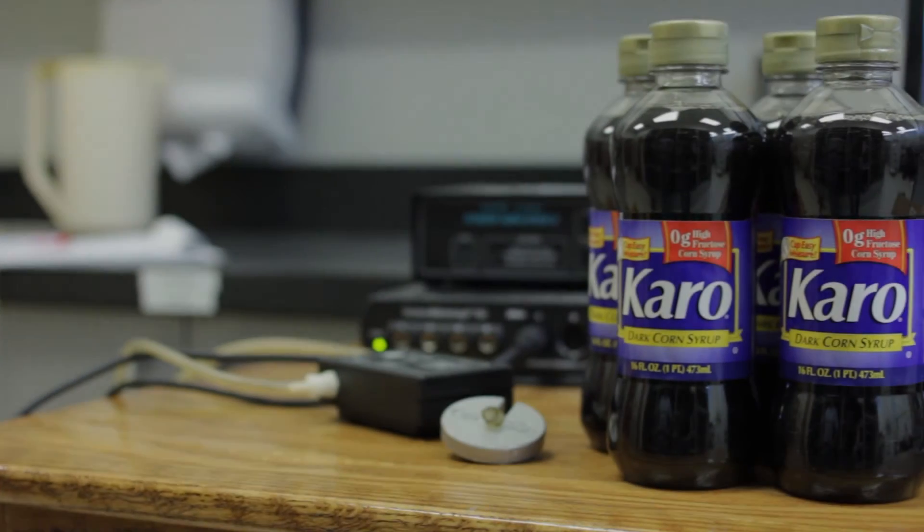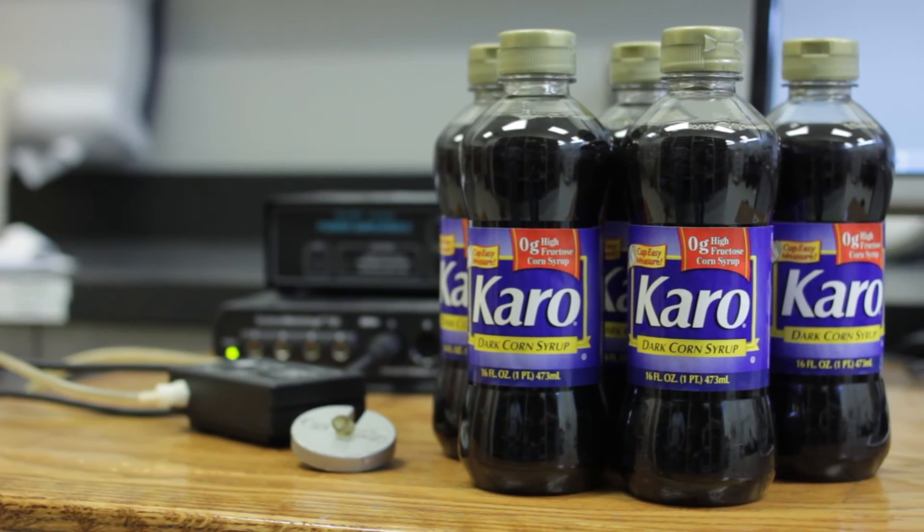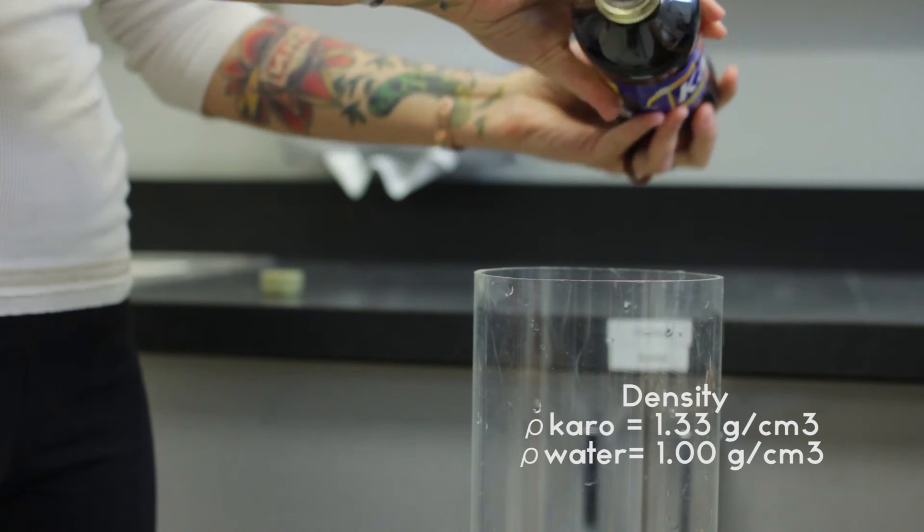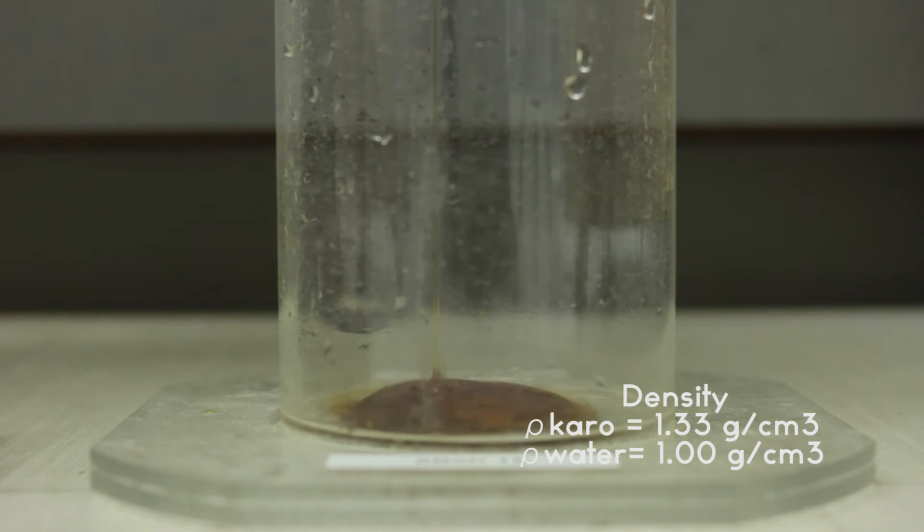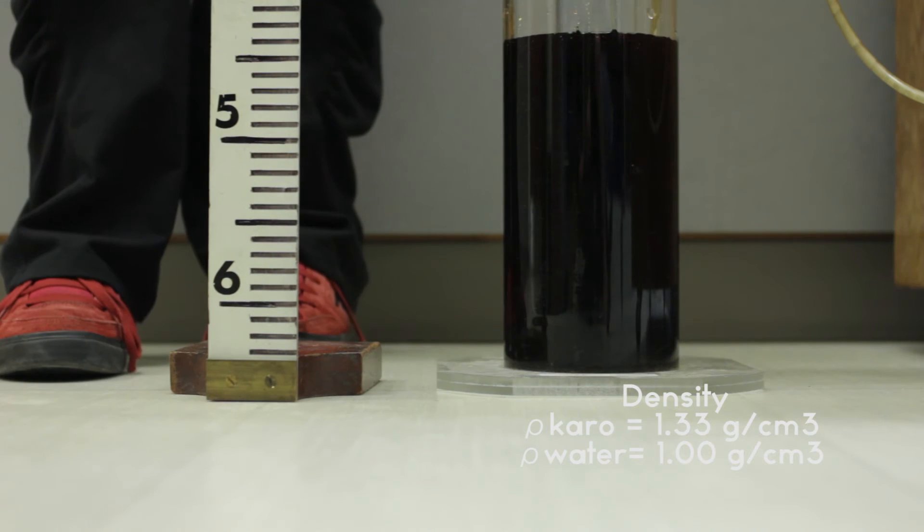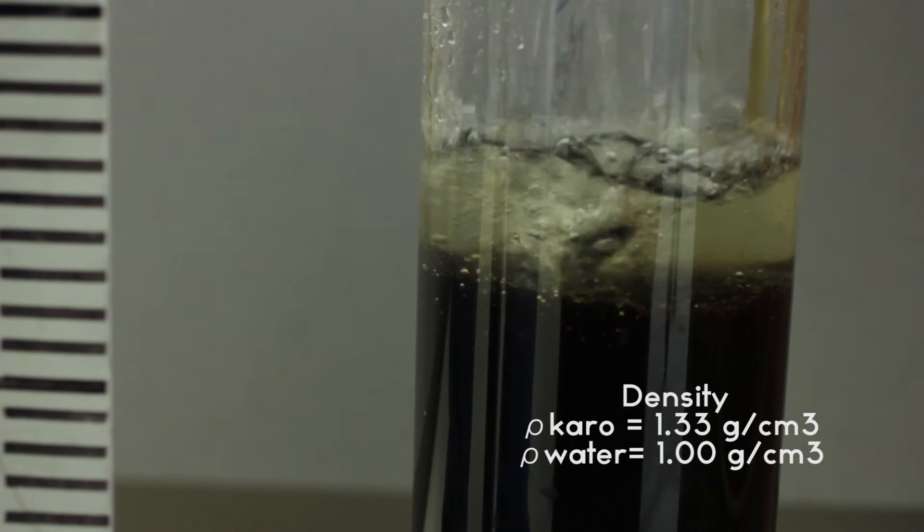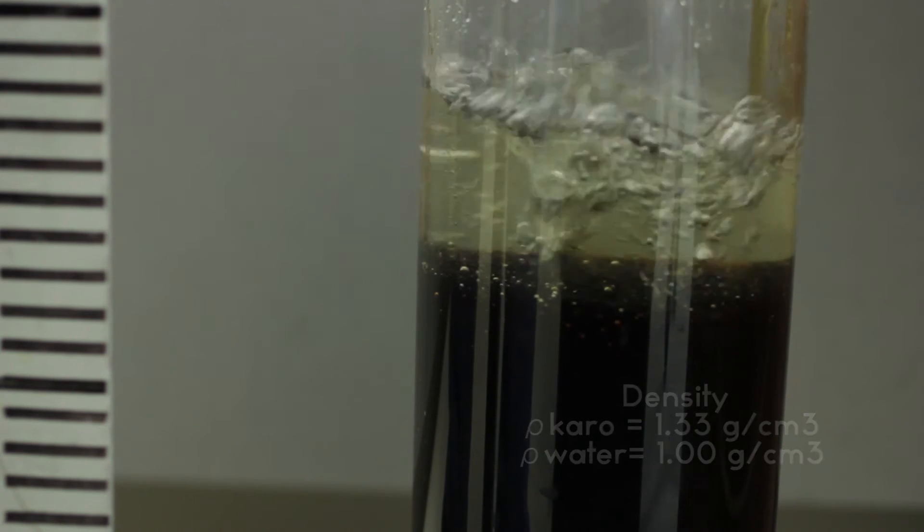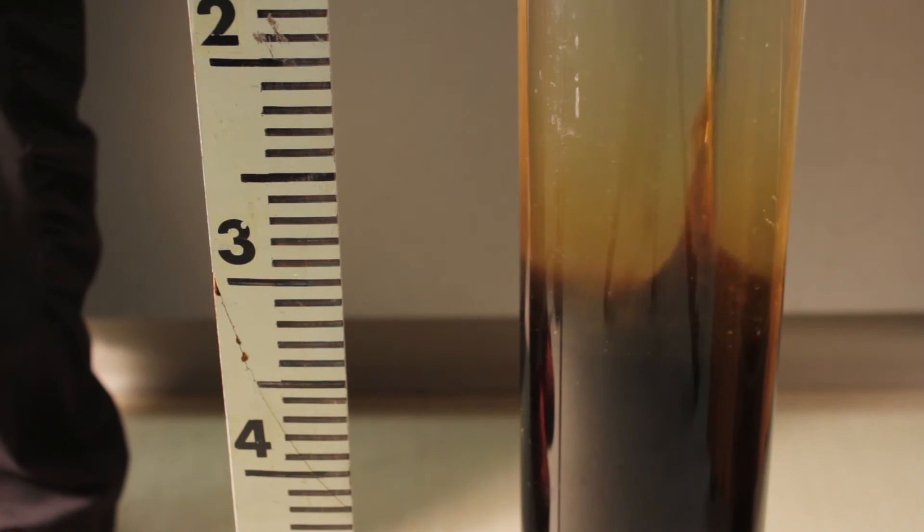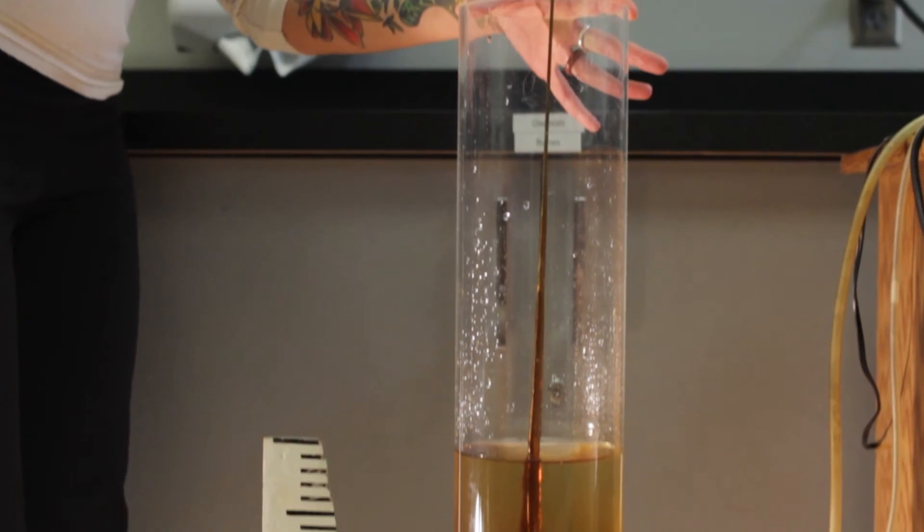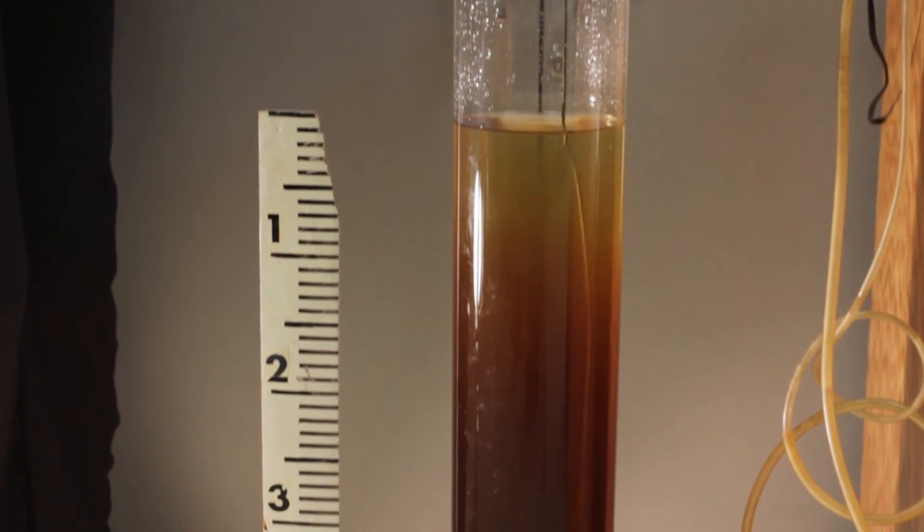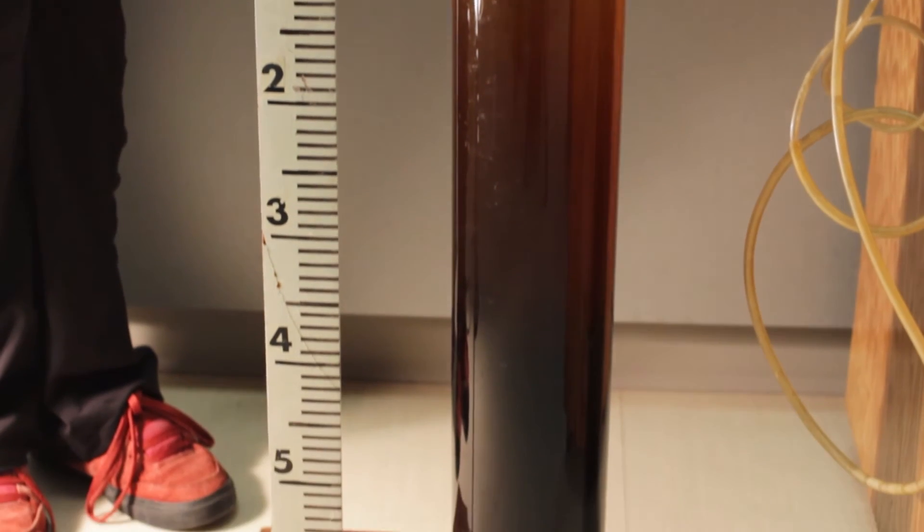We have removed the water from the cylinder and will now add some Karo syrup. Note that Karo syrup has a density of 1.33 grams per centimeter cubed compared to water's density of 1 gram per centimeter cubed. We now fill the rest of the cylinder with water. We have attempted to create a gradual increase in density from the top of the solution, being almost all water with a density of 1 gram per centimeter cubed, to the bottom, being almost all Karo syrup with a density of 1.33 grams per centimeter cubed. What scientists would call a density gradient.